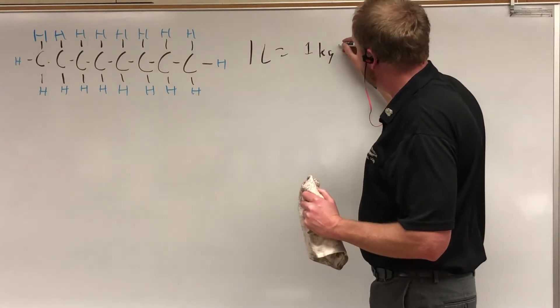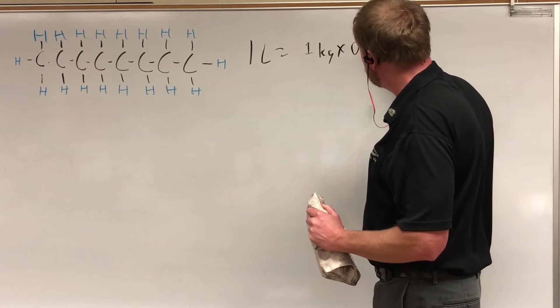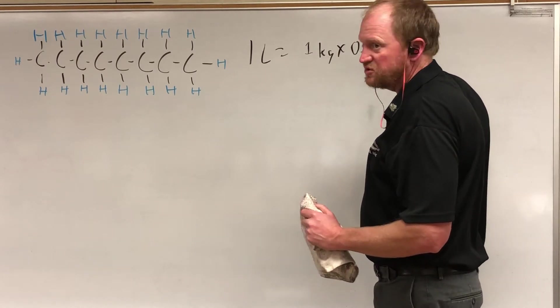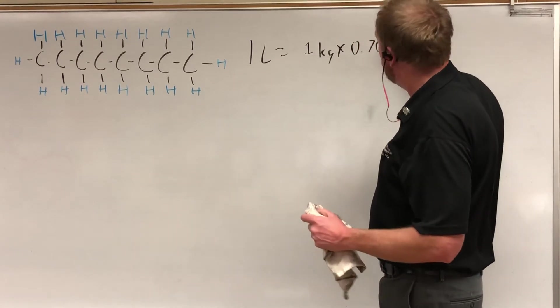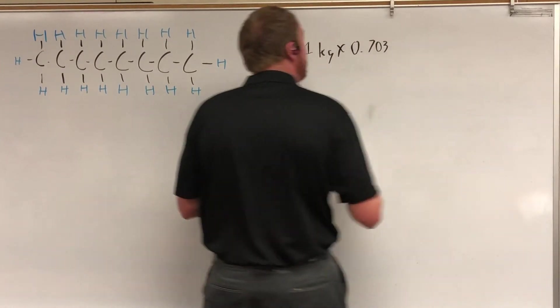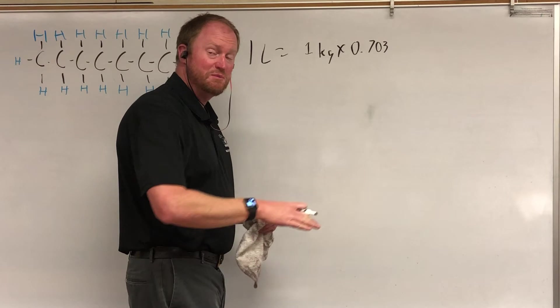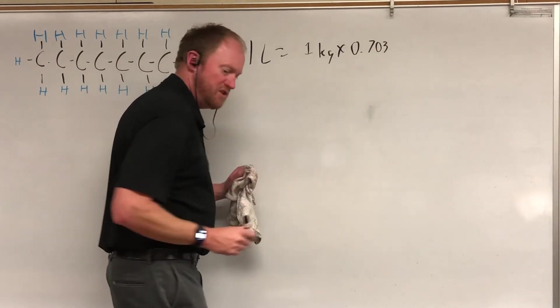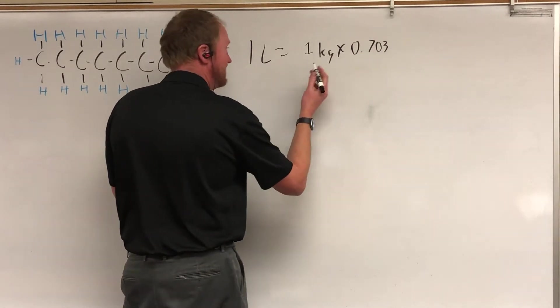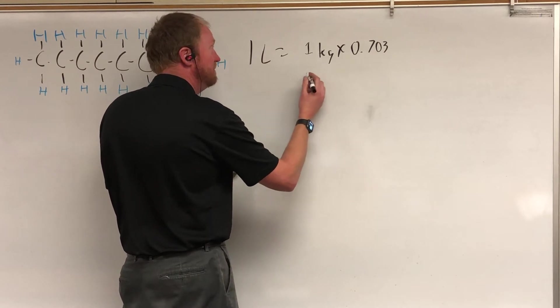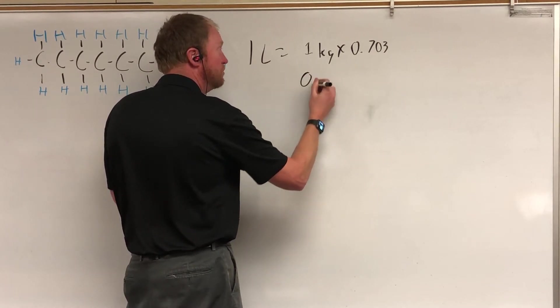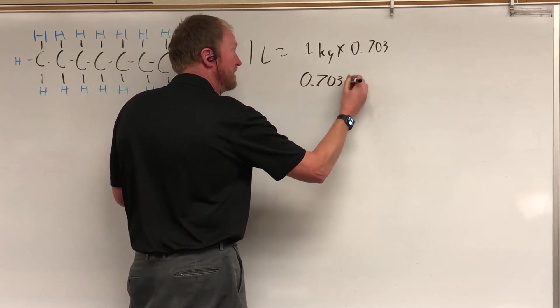Now gasoline has a density of 0.703. Gasoline is less dense than water. That's why they tell you not to try to put out a gasoline fire with water because the water will all end up under the gasoline that still will be burning. But that's not either here nor there. So you multiply that together and you find that one liter of gasoline has a mass of 0.703 kilograms.